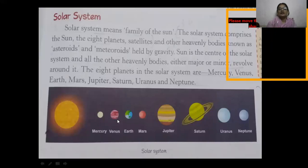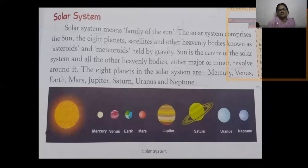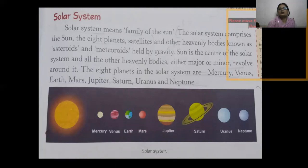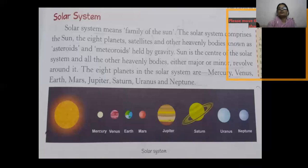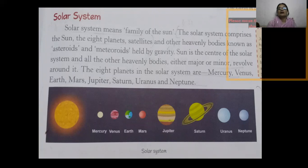Now the next topic we are going to study is the solar system. Solar system means the family of the sun. The solar system comprises the sun and its different planets. The sun is the center of the solar system and all other heavenly bodies, whether major or minor, revolve around it.